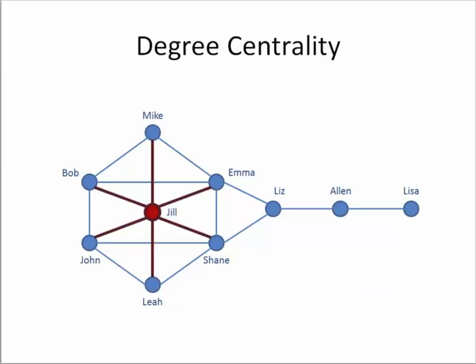Let us turn our attention now to the measures that characterize individual nodes in a network. Let us start from a network measure which is commonly used and has the easiest intuitive meaning: degree centrality. Degree centrality is a simple measure that indicates the overall number of connections for each actor in a network. In this example, we can see that Jill is the actor with the highest number of connections — Jill has six individual connections — making her quite central in most potential conversations in this network.